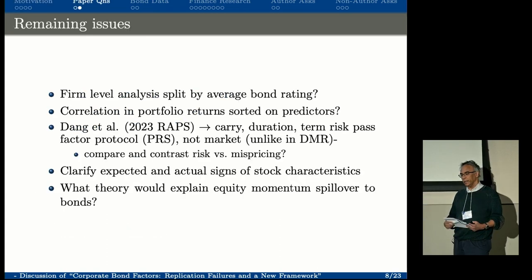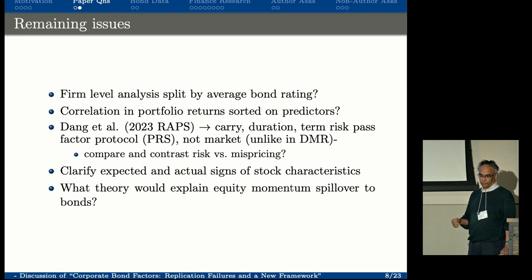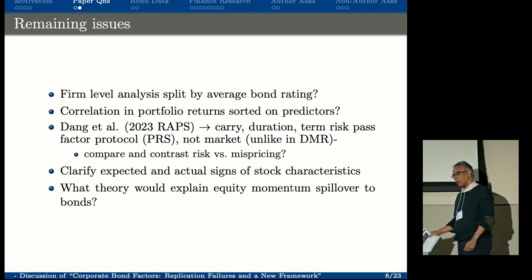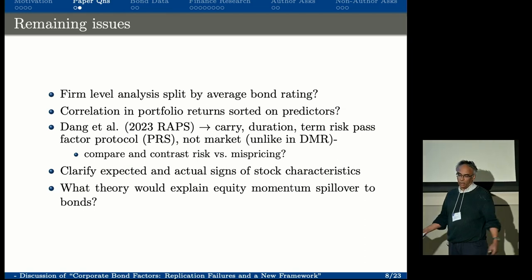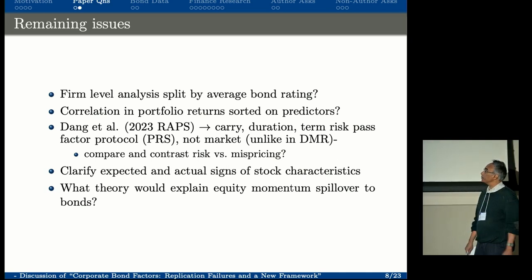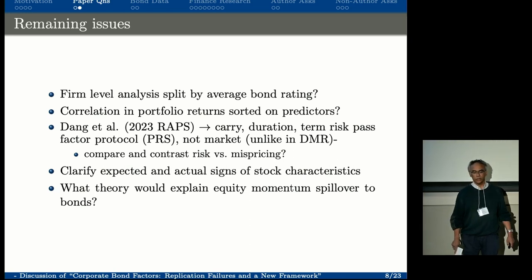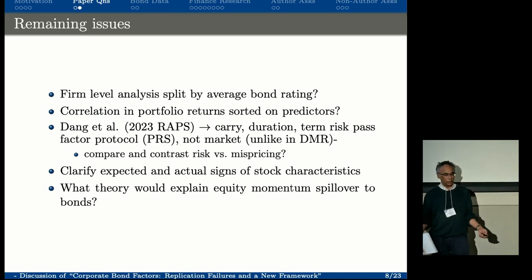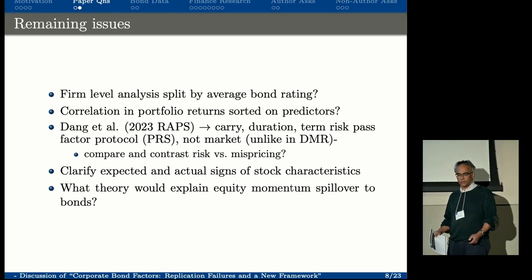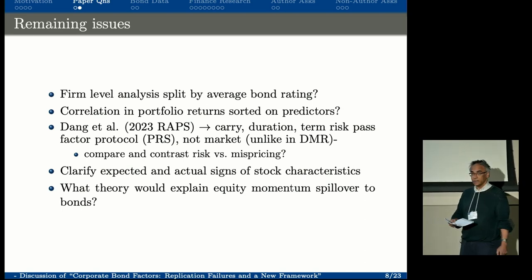Remaining issues in the paper: the firm-level analysis could be split by bond rating category—it would be interesting to see credit risk versus low credit risk. There should also be documentation of how correlated the returns in these characteristics are, because each factor is not independent of the other. There's also the issue of risk versus mispricing—Kunthar Dek and I have a paper in the RFS on a protocol for this, and Stefano Giglio also has a paper. Some notion of whether it's covariance risk or mispricing would be useful.